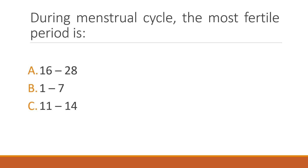During the menstrual cycle, the most fertile period is mid-cycle — days 11 to 14. The correct answer is option C. And that's all for today; if you liked it, please hit the like button and subscribe to our channel for more informative videos.